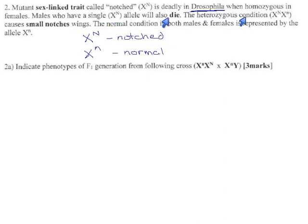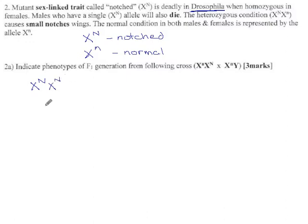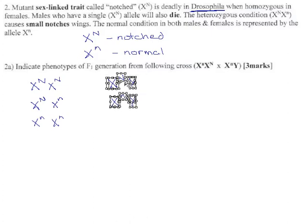Males who have a single X^N will die. The heterozygous condition in females causes small notches, and the normal condition is X^n. So here are the possible genotypes and phenotypes — let's get all this figured out before we go any further. We could have X^N X^N, X^N X^n, X^n X^n, X^N Y, and X^n Y.